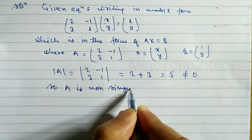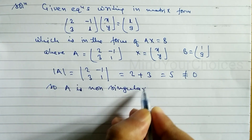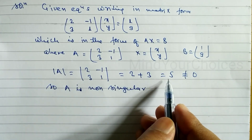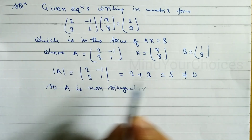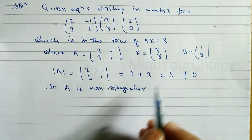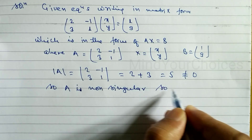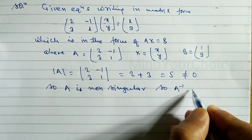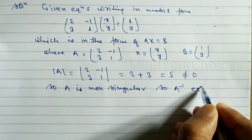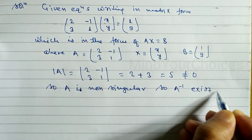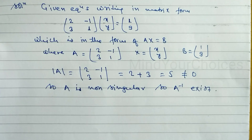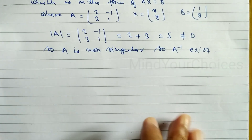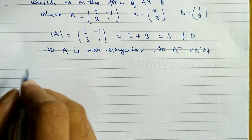If the determinant is 0 then the matrix is singular. If the determinant is not equal to 0, then A is a non-singular matrix. Since A is non-singular, we can find a unique solution for x and y using A inverse.